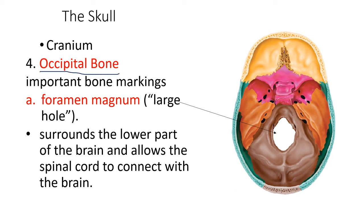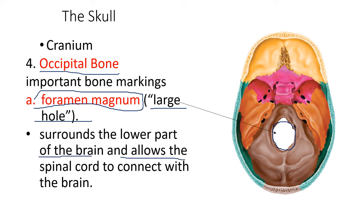In the occipital bone, like the temporal bone, there are also important markings. The first is the foramen magnum — meaning 'large hole.' There is a large hole here that surrounds the lower part of the brain and allows the spinal cord to connect with the brain. This is the hole through which the spinal cord enters the cranium to reach the brain.